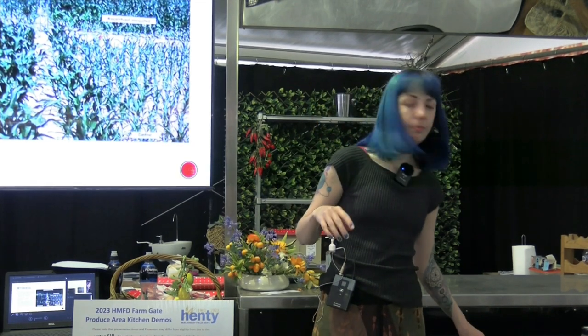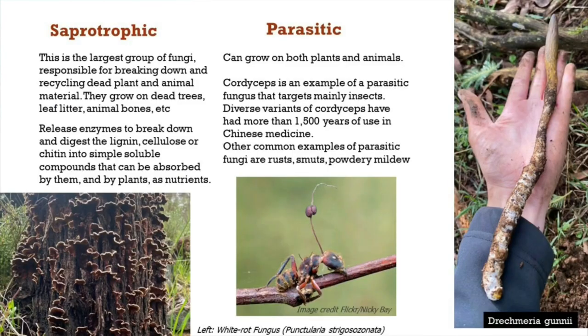Black truffle is an example of a mycorrhizal fungi. Mycorrhizal is very important in the environment. The mycorrhizal filaments create an organic glue that binds soil and can resist erosion, aid in moving water into the soil profile, and prevent overland flow of soil.